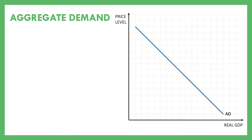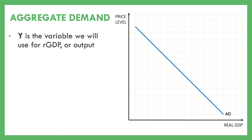I'm going to start using the variable Y — capital Y — as our real GDP, or output. Y, real GDP, and output can all be used interchangeably. Thinking back to our real GDP formula from unit four: Y equals C plus I plus G plus X sub N, meaning real GDP equals consumer spending plus investment spending plus government spending plus net exports.